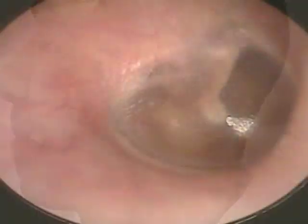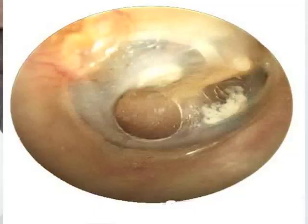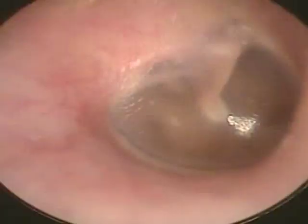You must also check if the tympanic membrane is intact — there must be no perforations or openings. The tympanic membrane must be concave in shape. If it is retracted, it could indicate blockage of the Eustachian tube. If there is a bulging tympanic membrane, it could indicate increased pressure, as found in otitis media. If the tympanic membrane is not pearly grey and transparent but is red, that indicates an ear infection. That concludes the examination of the ear.